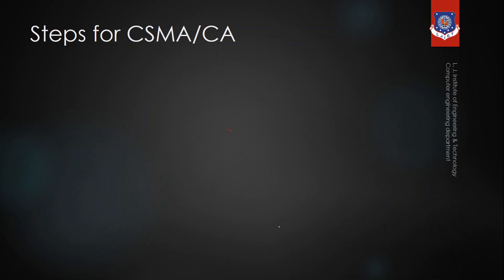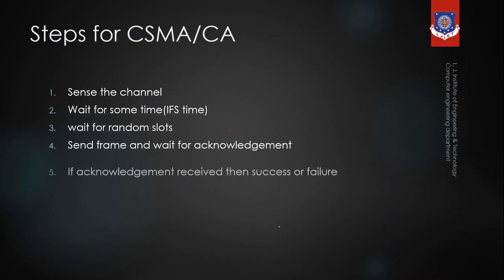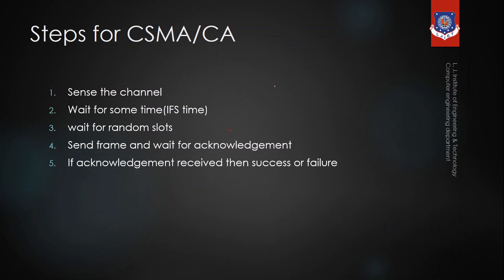Now let's see the steps for CSMA/CA. In order to send data, the sender has to follow these 5 steps. Suppose there are 4 devices A, B, C and D, and each device has to follow these 5 steps to send data. Suppose device A wants to send data. In the first step, device A will sense the channel to check whether the channel is busy or idle. Suppose the channel is idle, so A will wait for some time called IFS time — inter-frame space.